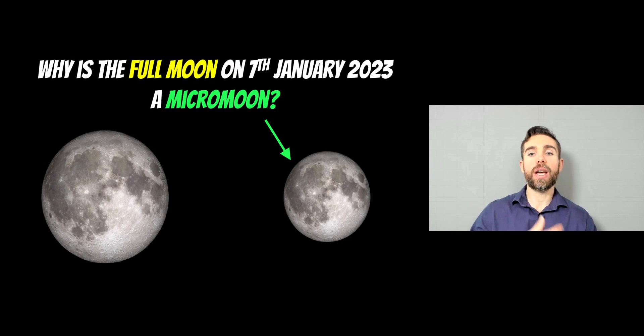On the 7th of January 2023, there's going to be a full moon, but it's also going to be a micromoon. So what is a micromoon and how is that different to something like a supermoon?